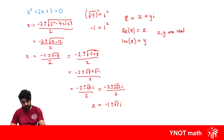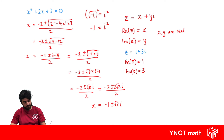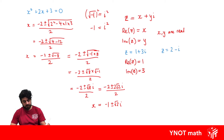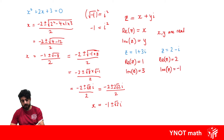For example, if we have a complex number z equals 1 plus 3i, we can say that the real part of z equals 1 and the imaginary part of z equals 3. If we have a complex number z equals 2 minus i, we say that the real part of z equals 2 and the imaginary part of z equals minus 1 — so not 3i and not minus i.